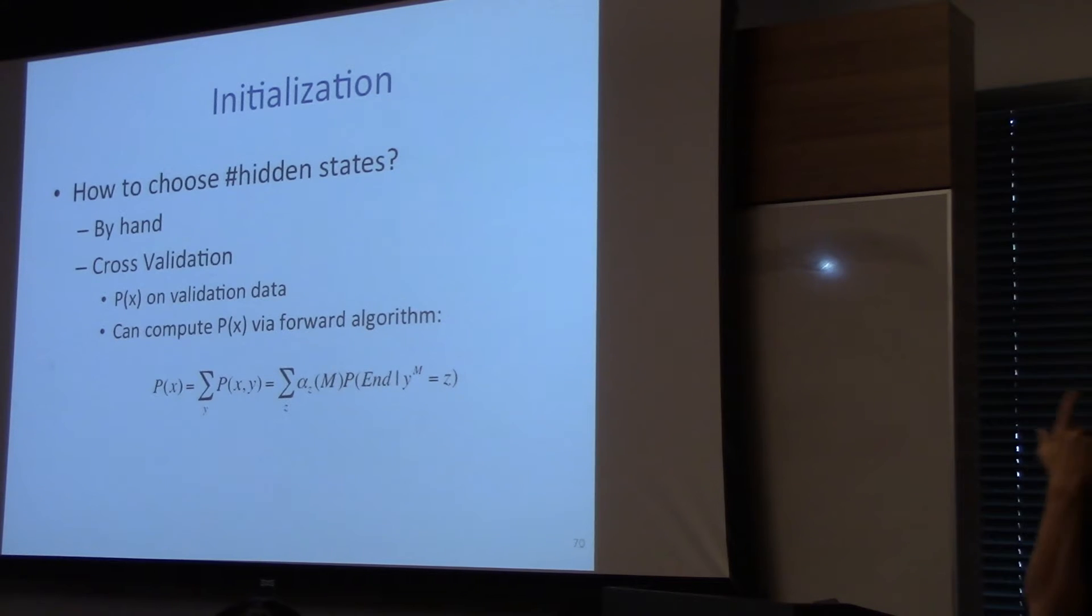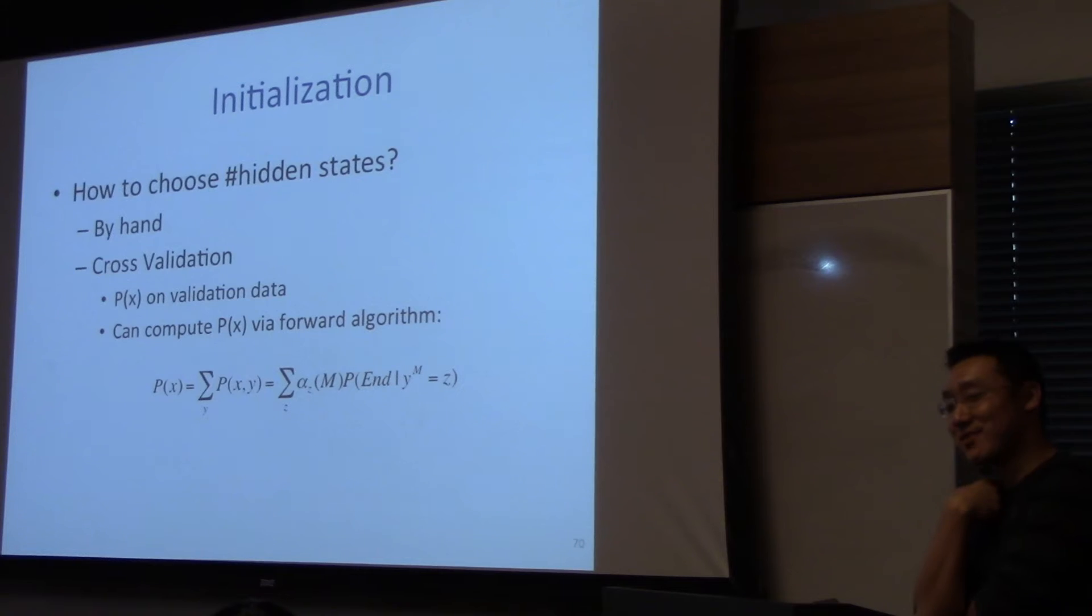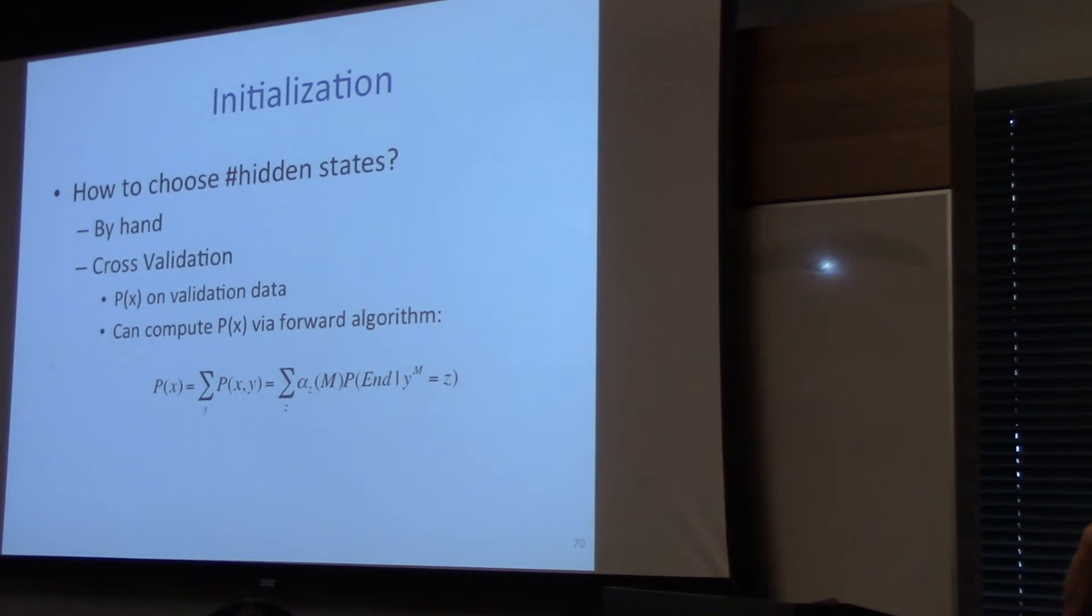So one thing is that if you don't observe the number of possible different Ys, how do you choose the number of different Ys? So how do you choose the number of hidden states? If you're given the labels, there's six part of speech tags and six hidden states. Not surprisingly, one often does this via cross-validation. You have your training set, you have your validation set, and then you see which number of hidden states maximizes your likelihood of the validation set.